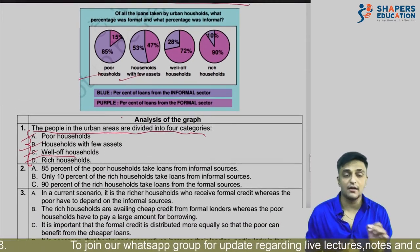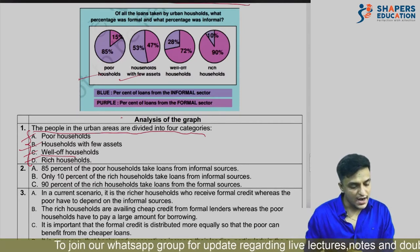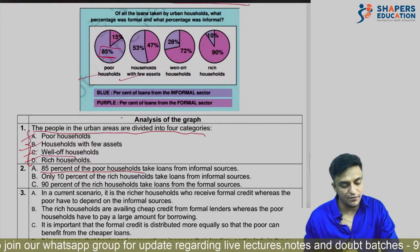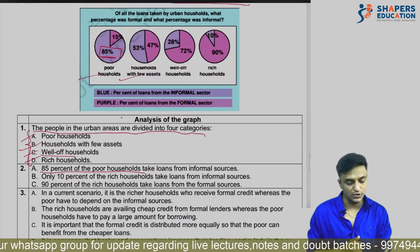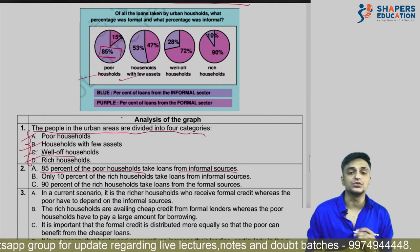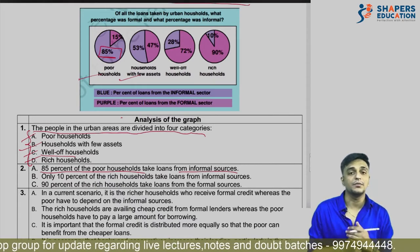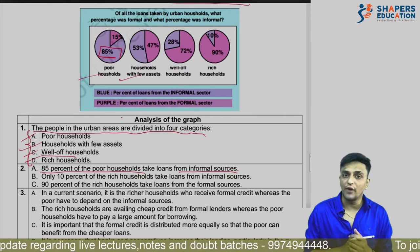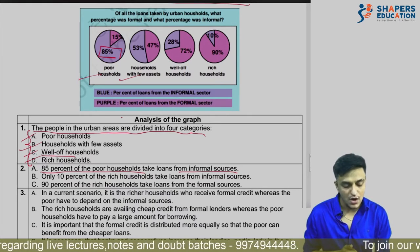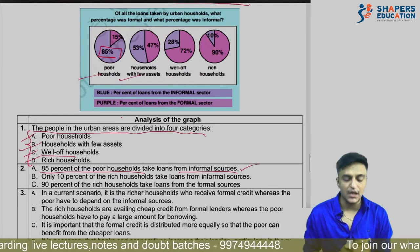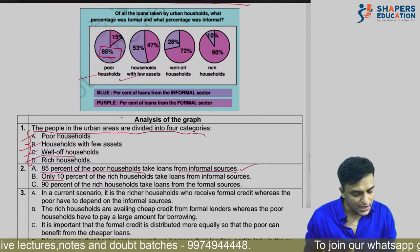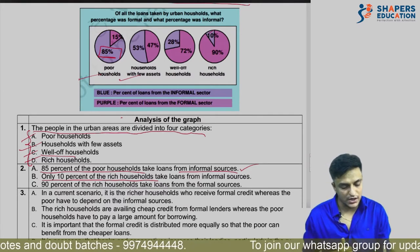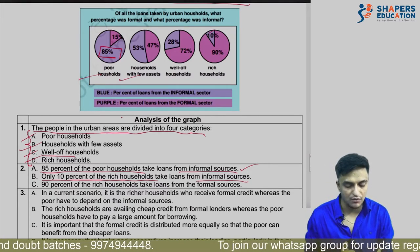From the graph analysis: 85% of poor households take loans from informal sources because they are poor and have no documents, so they generally remain dependent on informal sources. Only 10% of rich households borrow from informal sources.